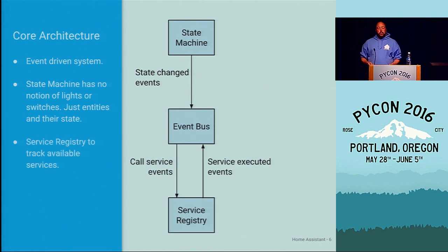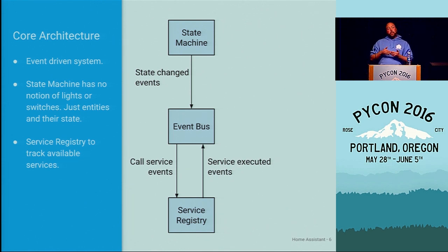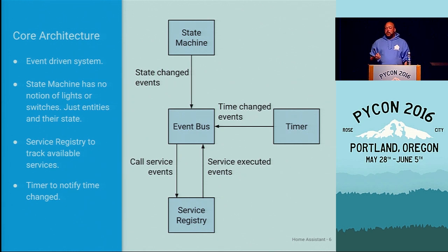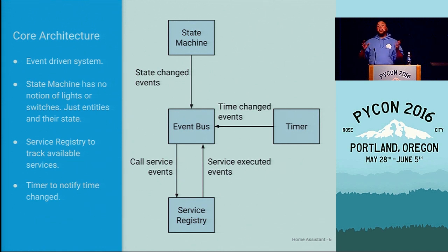The next piece is the service registry, which allows components to register services available to all code on the event bus — for example, a light component registers turn-on, a switch registers toggle. To call a service, you fire an event on the event bus; the service registry executes it and fires back to confirm. The last piece is the timer. Home Assistant is an event-based system — the state can only change based on events. Internally, the timer fires a time-changed event every second, allowing listeners to say 'notify me at 7 p.m.' Internal state can also change with external events from devices that push their state directly to Home Assistant.